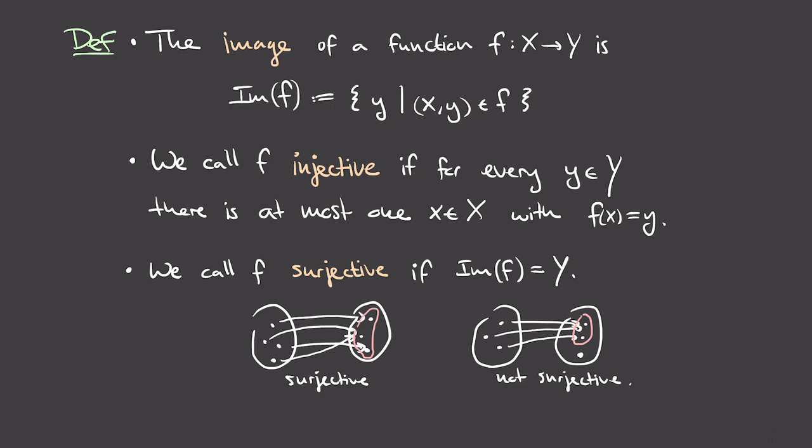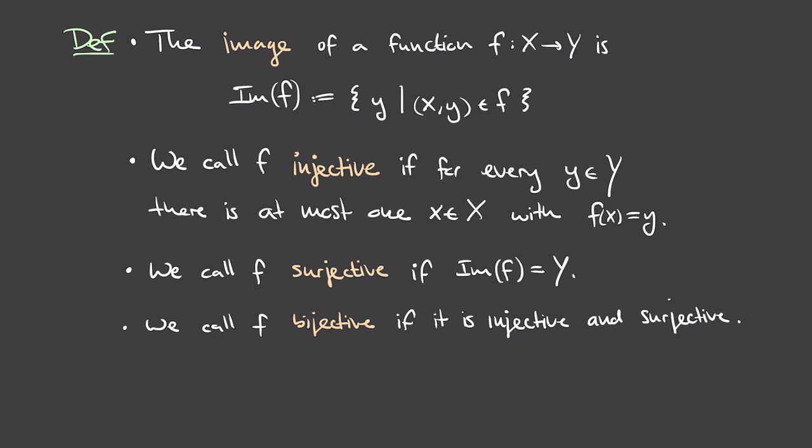Surjectivity means that any output you could want can be obtained by some input to the process. In a non-surjective case, there exists some output that isn't actually reachable because no input produces it. A function is called bijective if it is both injective and surjective. We saw examples showing any combination of injective/surjective is possible, but in the special bijective case every element in Y has exactly one arrow going to it.